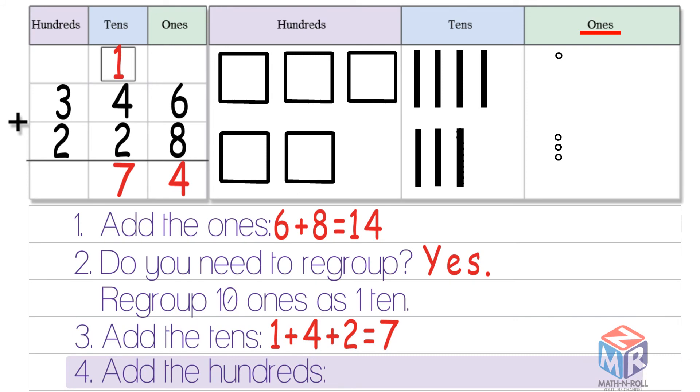Lastly we add the hundreds, 3 plus 2 is equal to 5. So 346 plus 228 is equal to 574. Here we go.